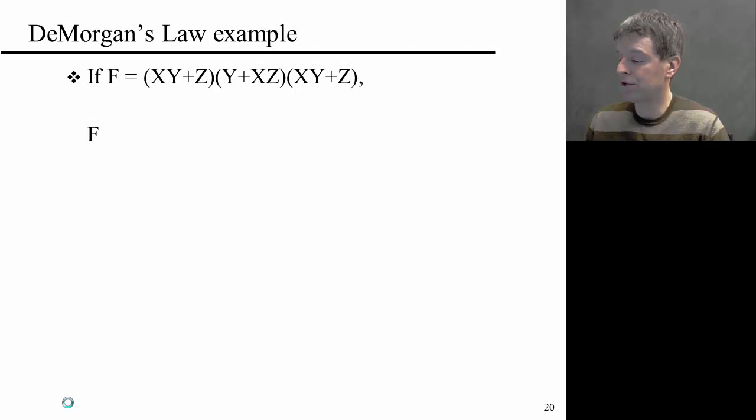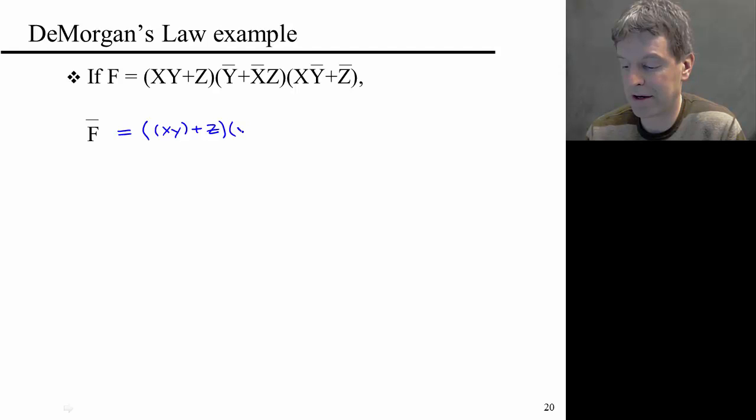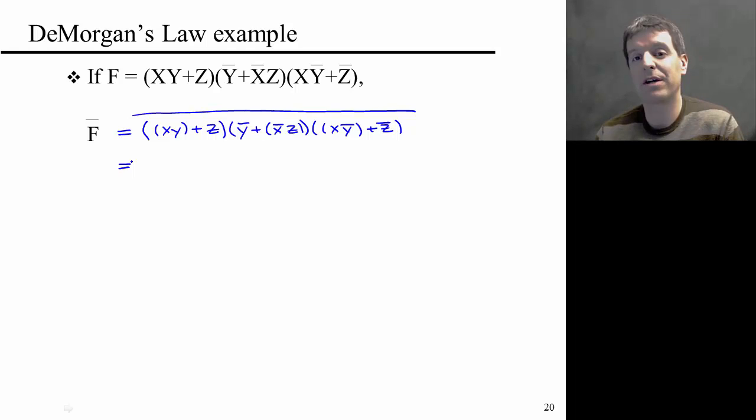So, not F. We're going to write this somewhat explicitly, including these parentheses around products. I'm just copying what's up there, but I'm adding parentheses, putting a bar over everything, and then applying DeMorgan's. I'll just replace AND by OR, OR by AND, and invert all the variables.